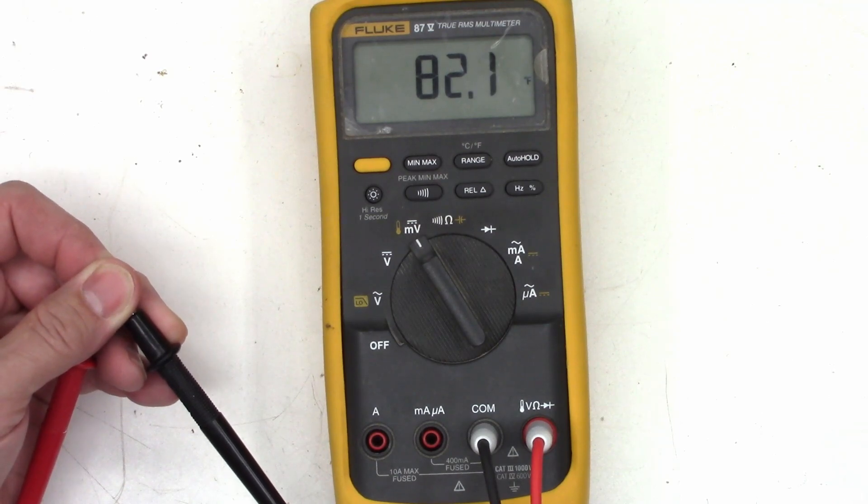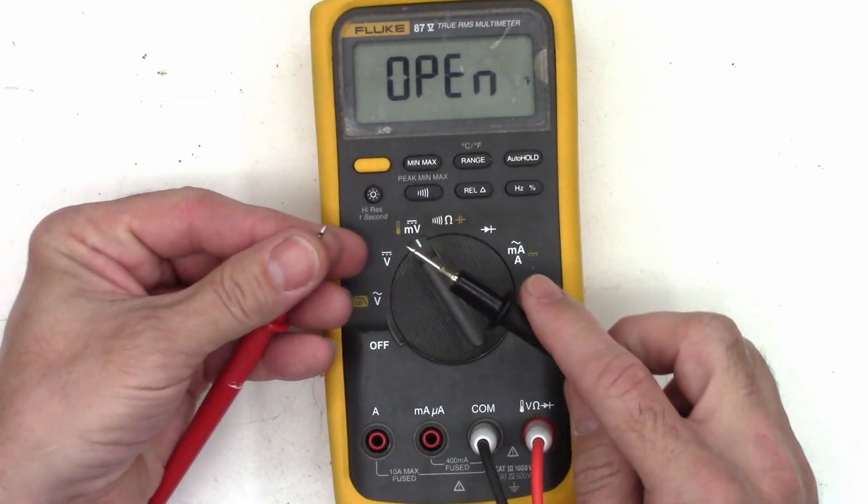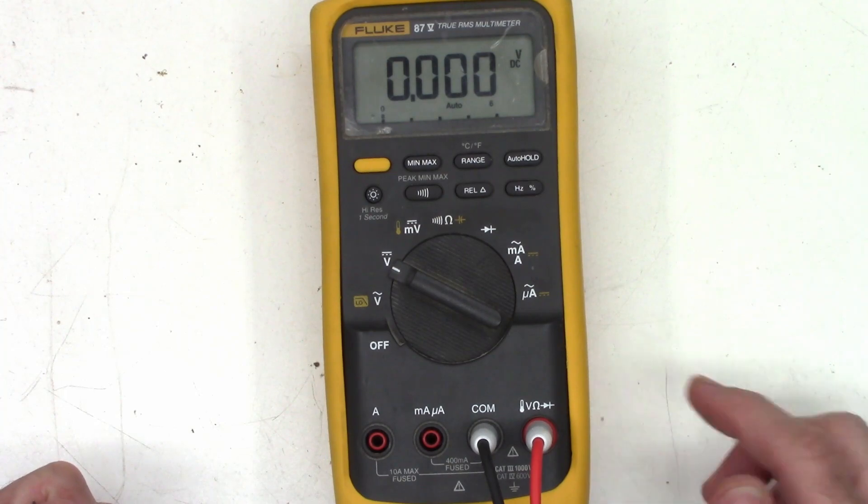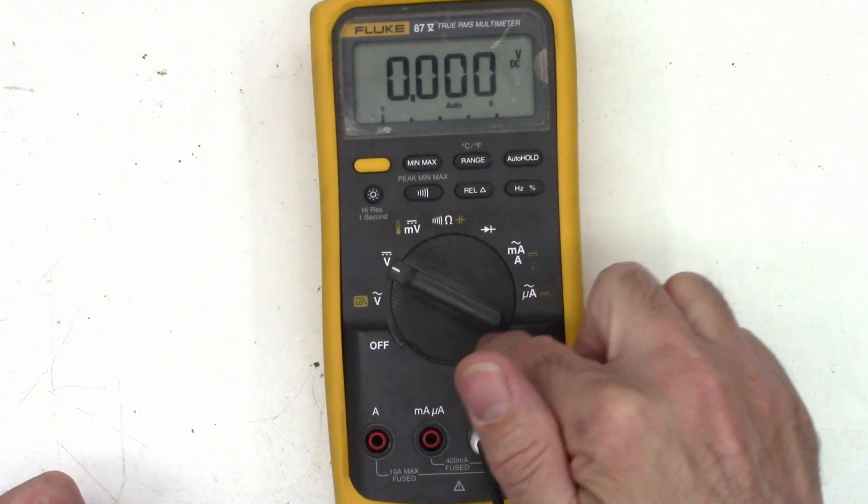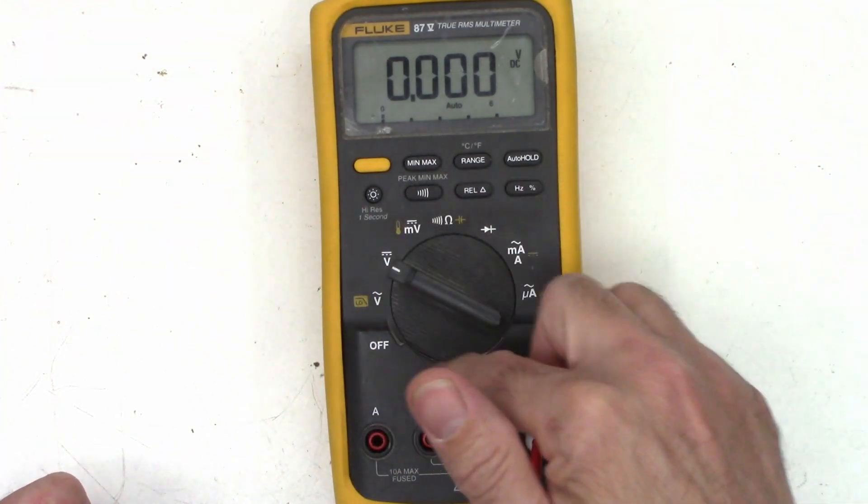82. So temperature works perfectly fine. So what's going on with volts? I wonder if it's just the contacts in the rotary switch. I think I'll start with that.